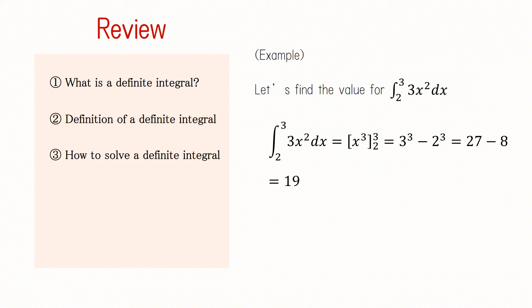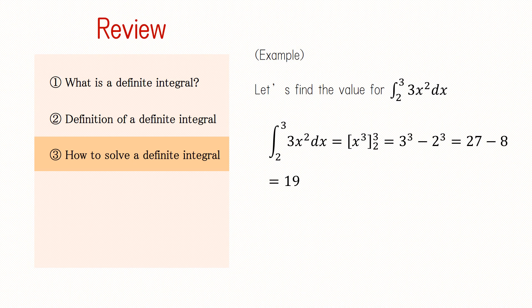Next, let's actually try to find the definite integral. One of the definite integrals of 3x squared is x cubed, and if we substitute in 3 for the upper limit of 3x squared, we get 27. And if we substitute in 2 for the lower limit, we get 8. So the definite integral is 19. This is how we use indefinite integrals and definite integrals to find the difference in values. That concludes this lesson.